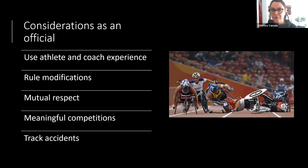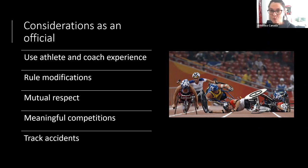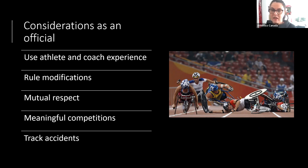As officials, use the athlete and coach experience: if you can't remember a rule or aren't sure what that person needs, ask them directly — they have the lived experience and can best advocate for any modifications they require to participate fully. The rule modifications in the World Para Athletics rulebook exist to support athletes in competing on a level playing field, taking into consideration their functional impairments.